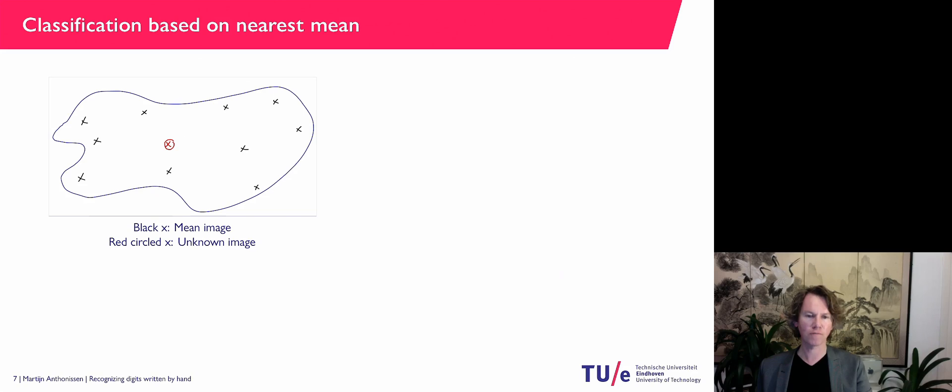I have an unknown image. And now, instead of having over 1,700 known images, I have for every digit here, the black crosses are the mean digits. So the average overall digits.